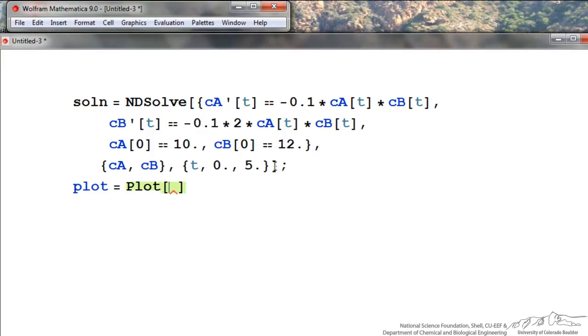And again a list within square brackets of what variables I'm plotting. In this case I'm going to plot Ca and Cb. And so I use a comma to separate them. I have to indicate the independent variable. And then the notation in Mathematica to refer to the data is as follows. A slash, a period and now the name of the equation that I'm plotting. Followed by a comma. Again a list that says t is my independent variable. And I want to plot it from 0 to 5.